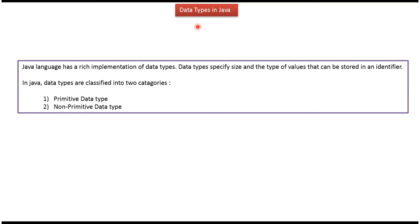Hi, in this video tutorial I will cover Java data types. Java data types are classified into two categories. The first one is primitive data type and the second one is non-primitive data type.